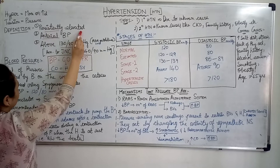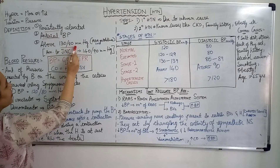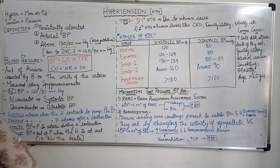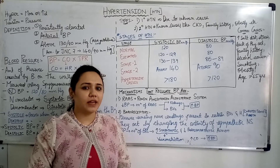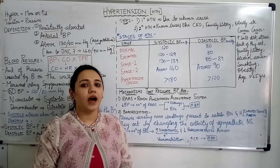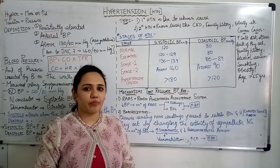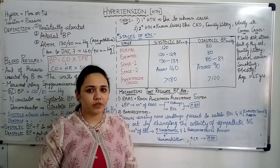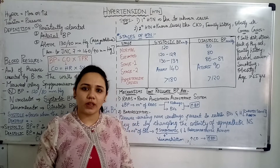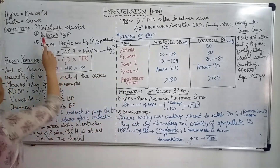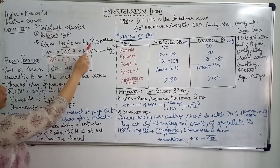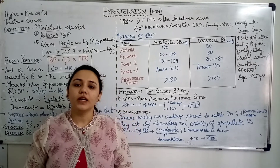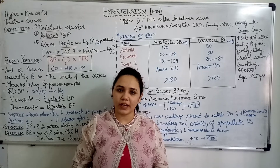The blood pressure should be persistently elevated. In some cases, when a patient reaches the hospital out of fear and stress, the patient's blood pressure increases, but that patient cannot be considered hypertensive because that increase happened only for a short period of time. The blood pressure must be persistently elevated — above 130 by 80 — for a patient to be called hypertensive. This is according to AHA guidelines 2017. Earlier, according to JNC 7, it was 140 by 90 mmHg.